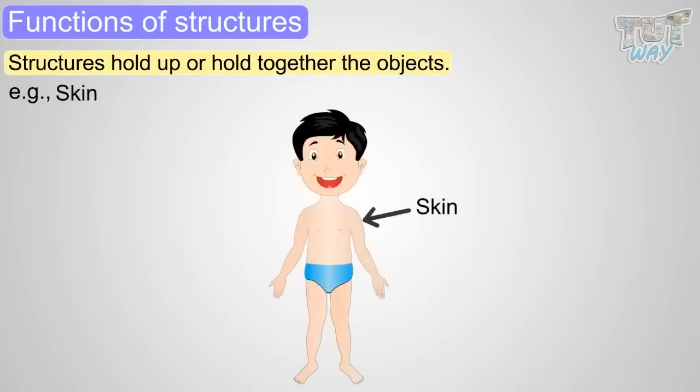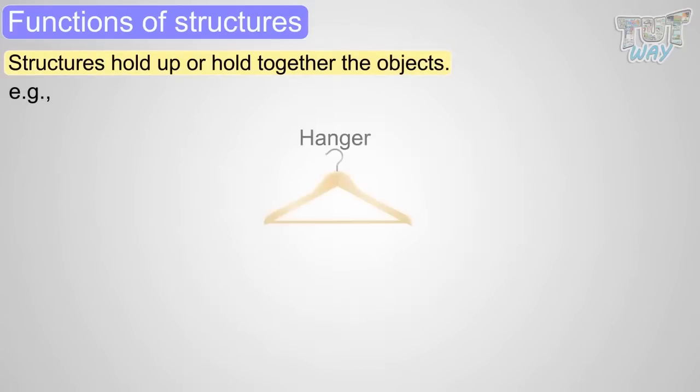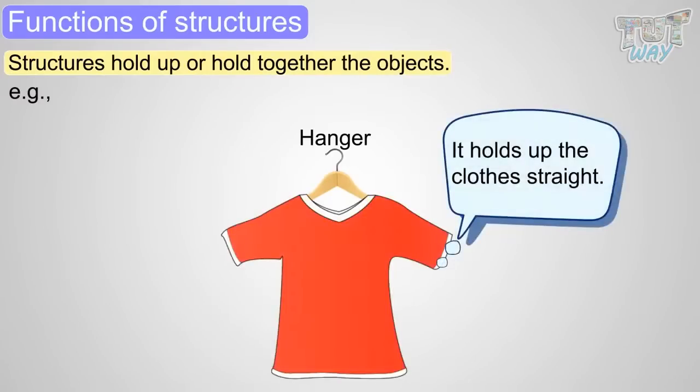Our skin is a natural structure. It holds all our internal organs. Our skin is waterproof, that is, it does not let water enter our skin. It is stretchable like rubber. A hanger is a structure too. It holds up the clothes straight.